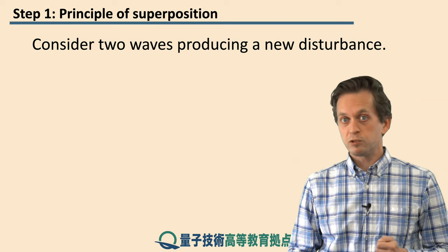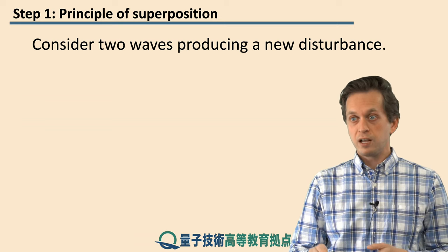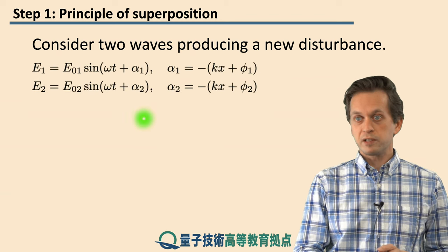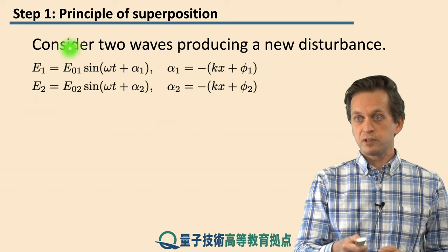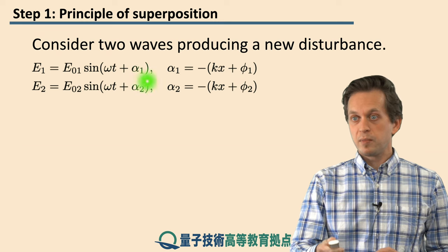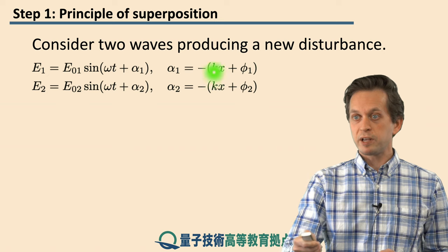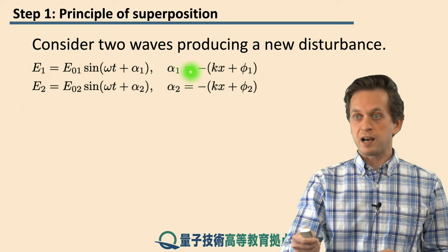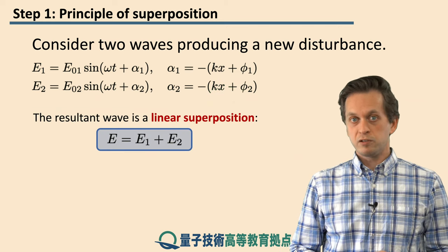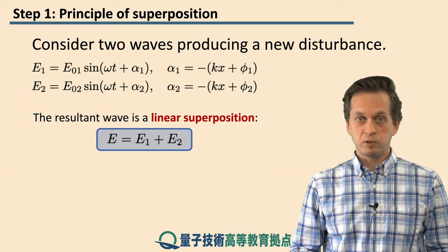So now let's consider two waves that are actually interacting together and creating a new third wave. How do we describe this new disturbance? So let's say that we've got two waves, E₁ and E₂, each with different amplitude, same frequency, and we grouped the spatial variation into these factors alpha, alpha₁ and alpha₂. And to get this new wave that E₁ and E₂ produce is actually relatively simple. You just add them together.